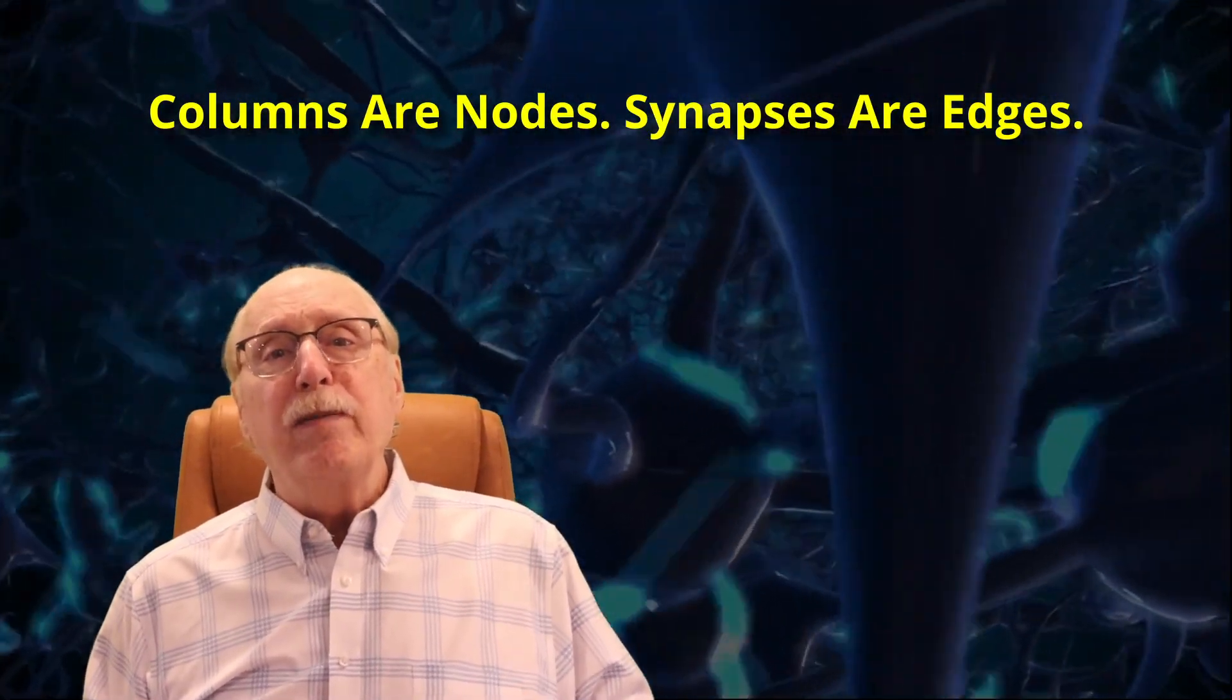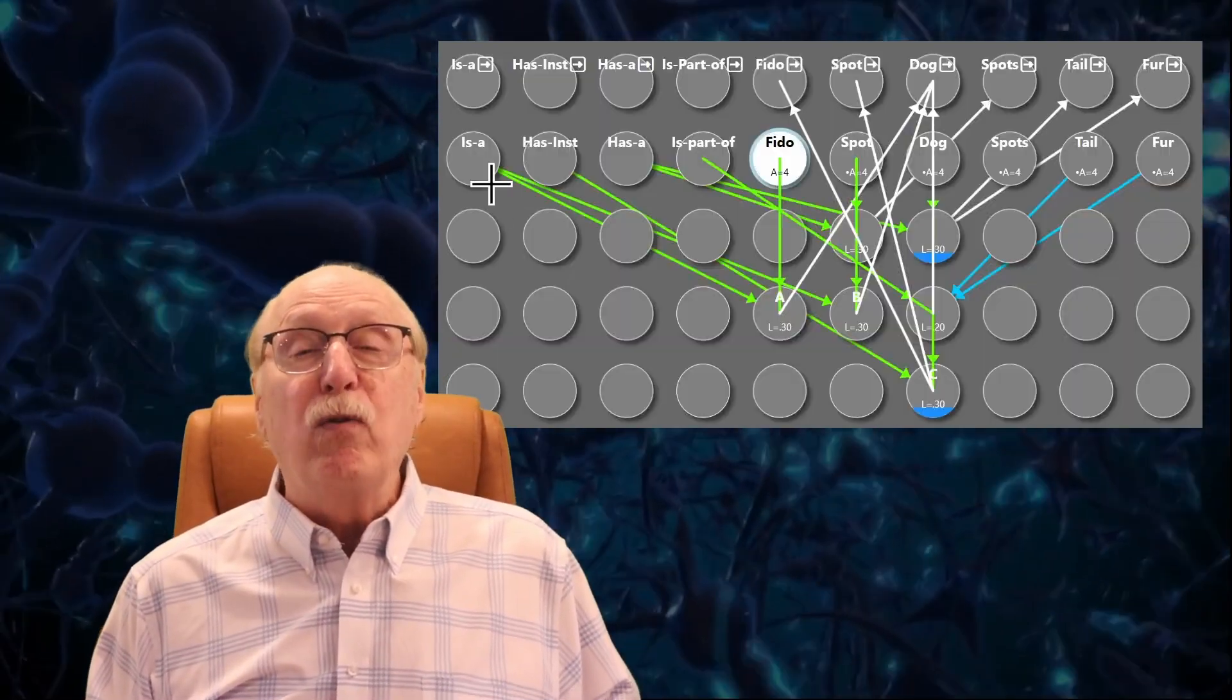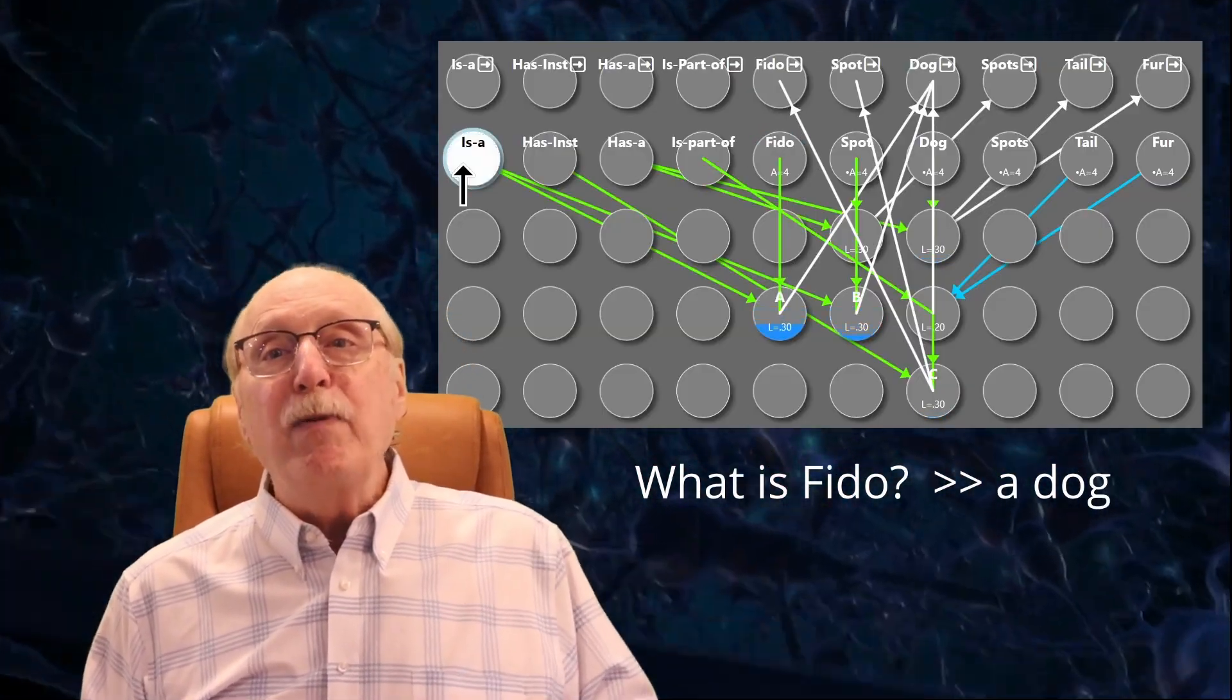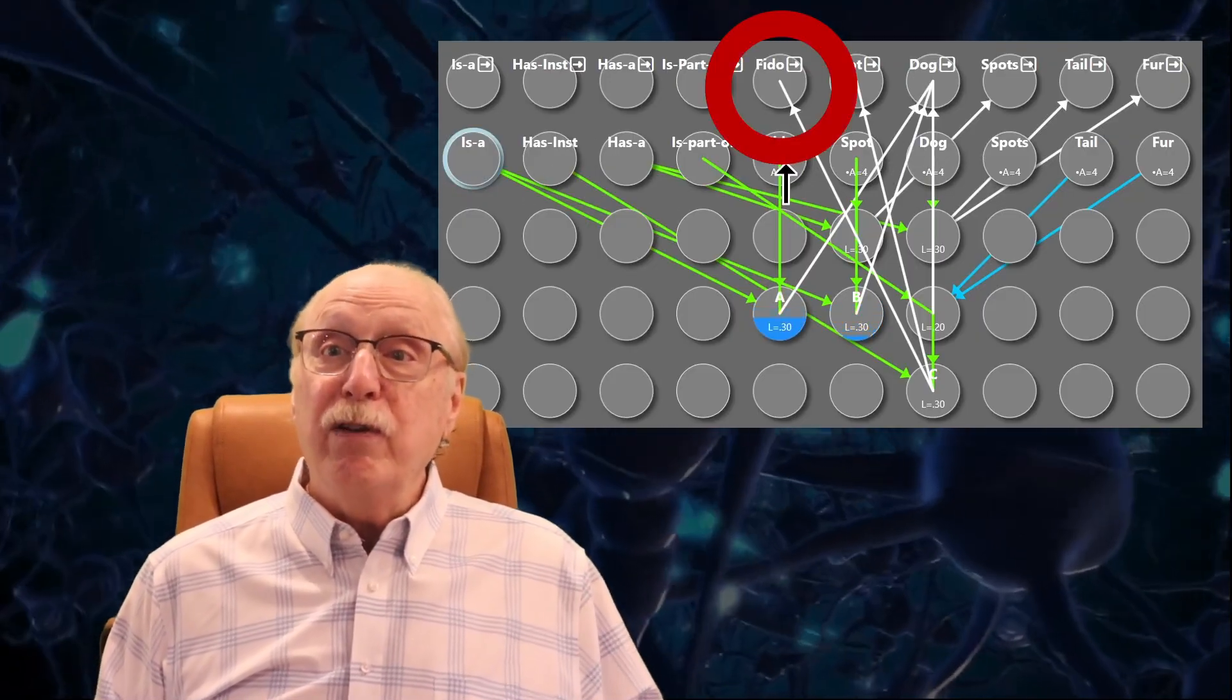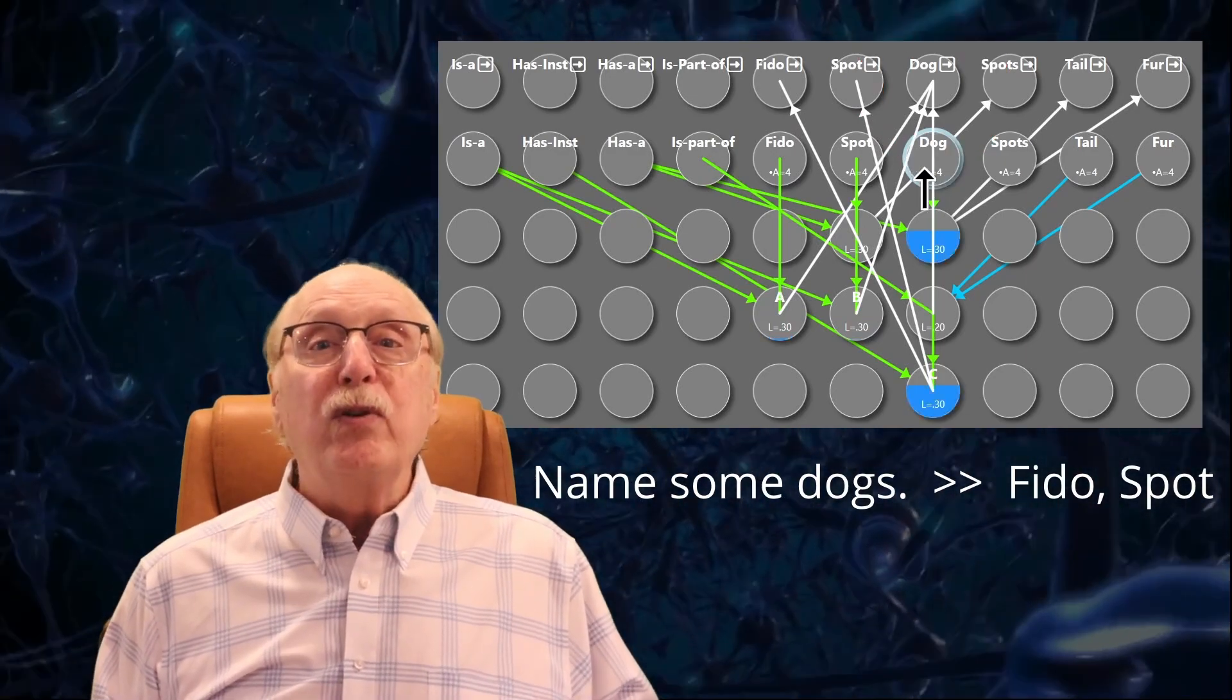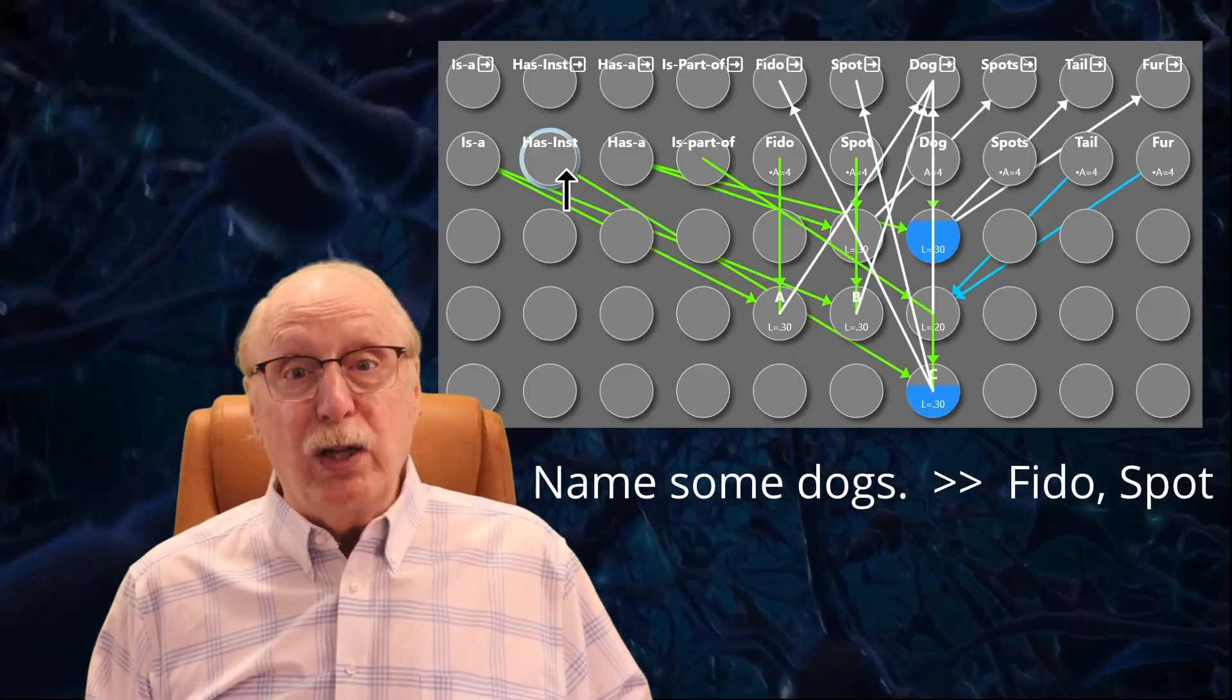Let's take our previous example of FIDO as a DOG, and a DOG has fur, and rearrange the neurons so they form into the conceptual layers of the neocortex. Near the top of each column is the output neuron. In this case, it's the FIDO output, or the DOG output.